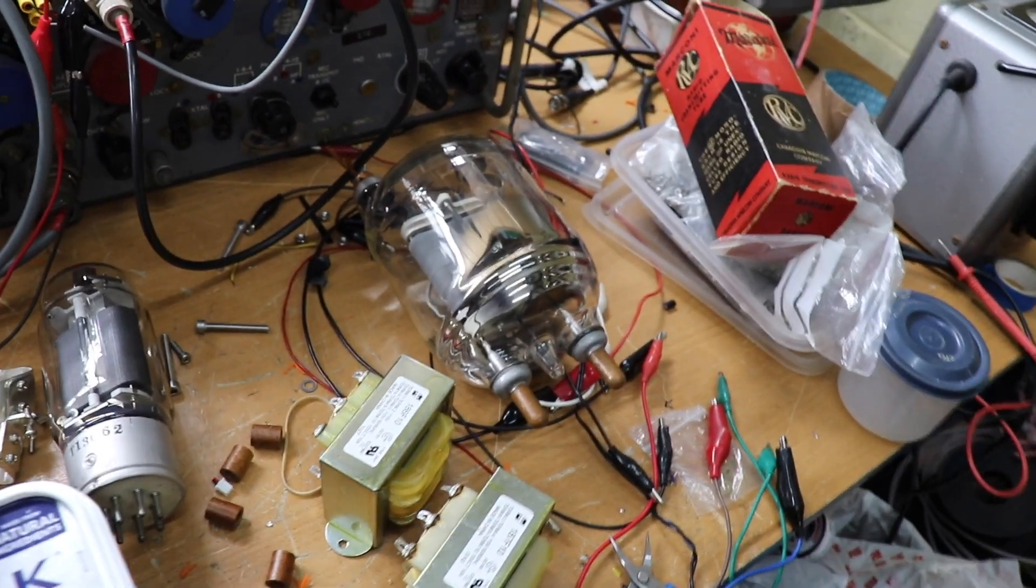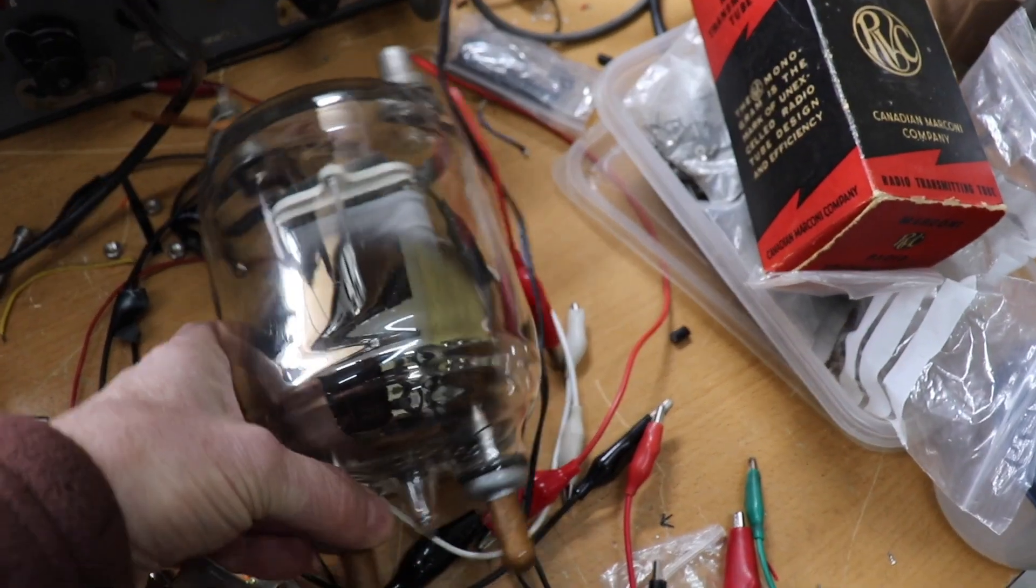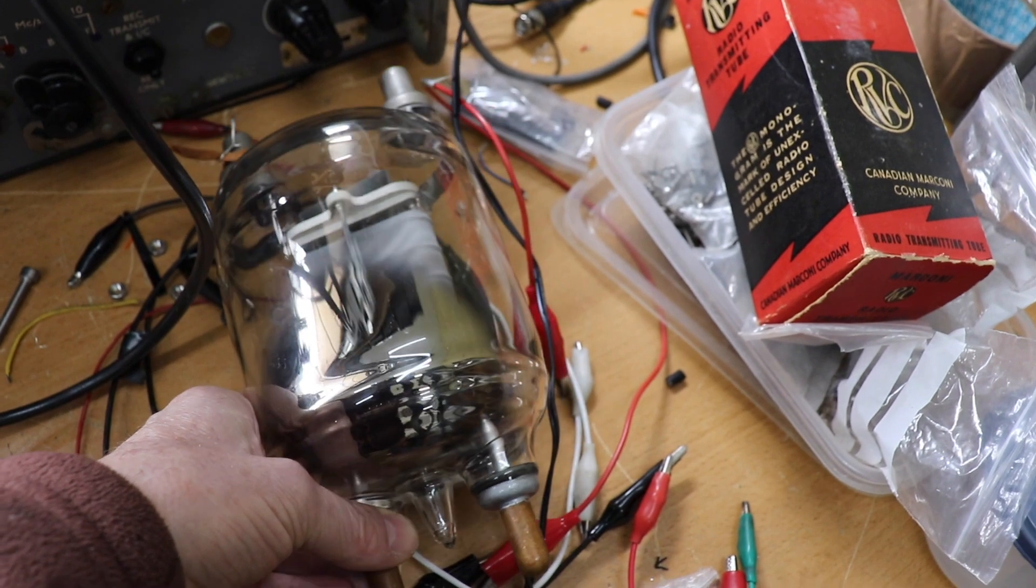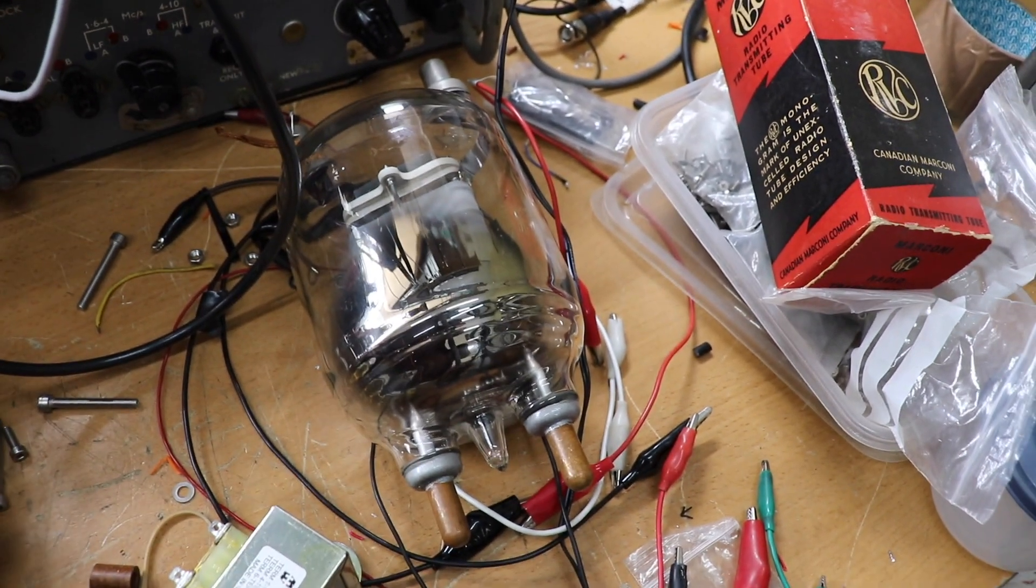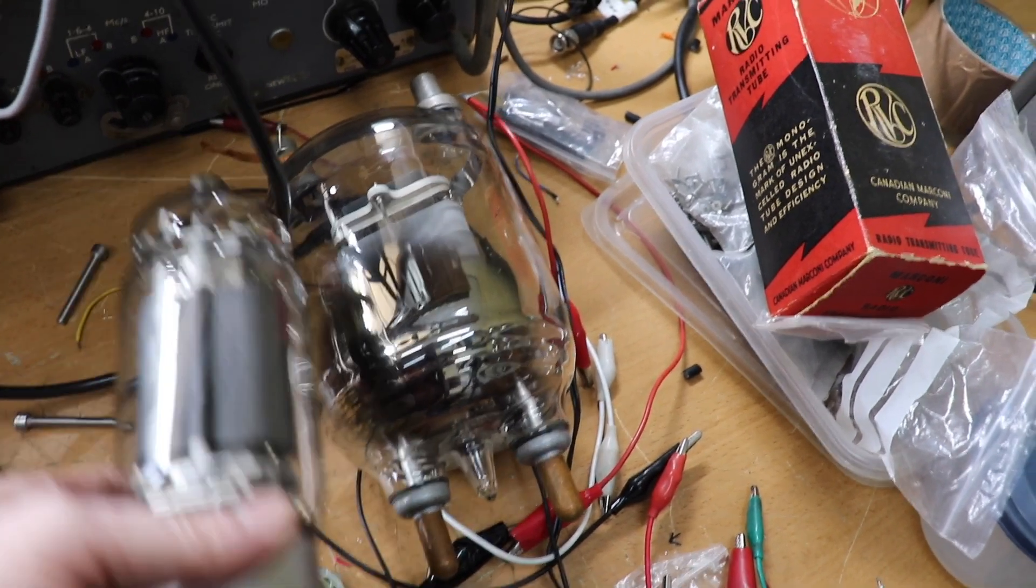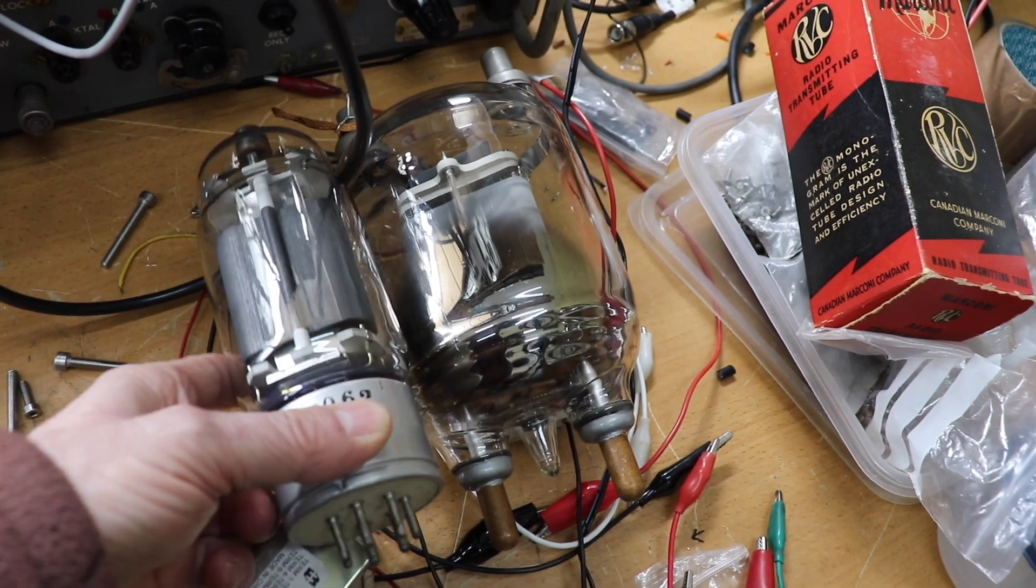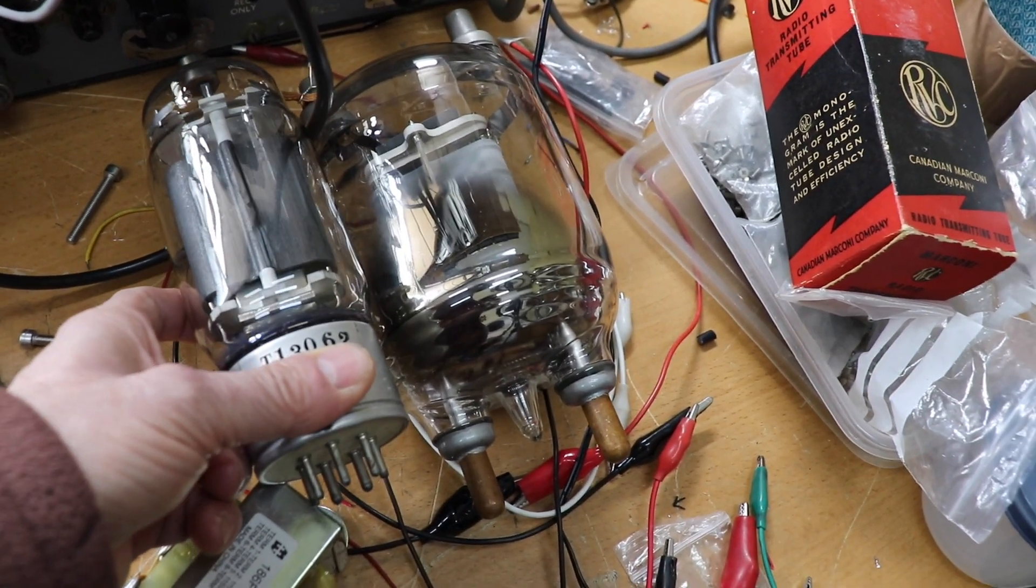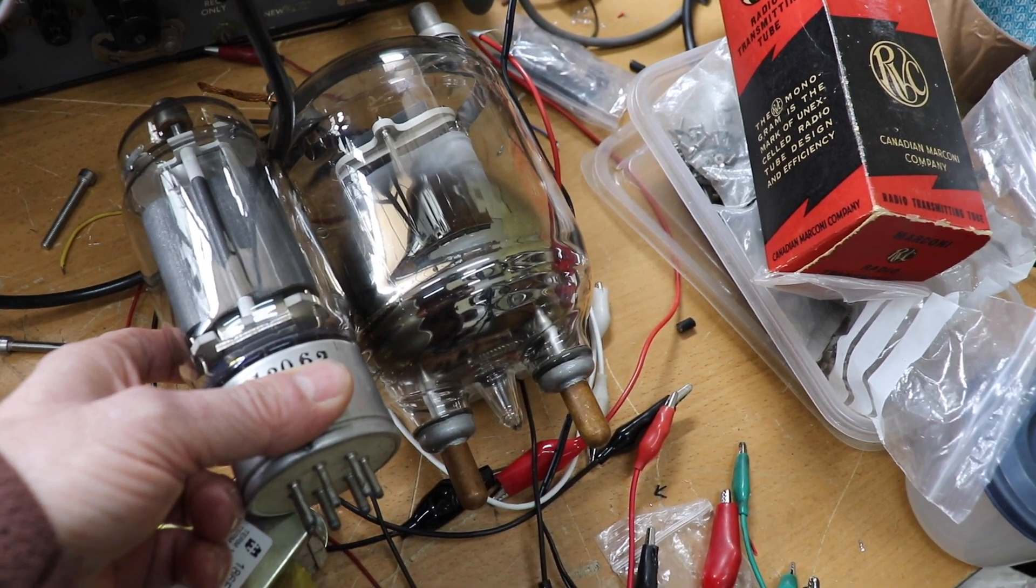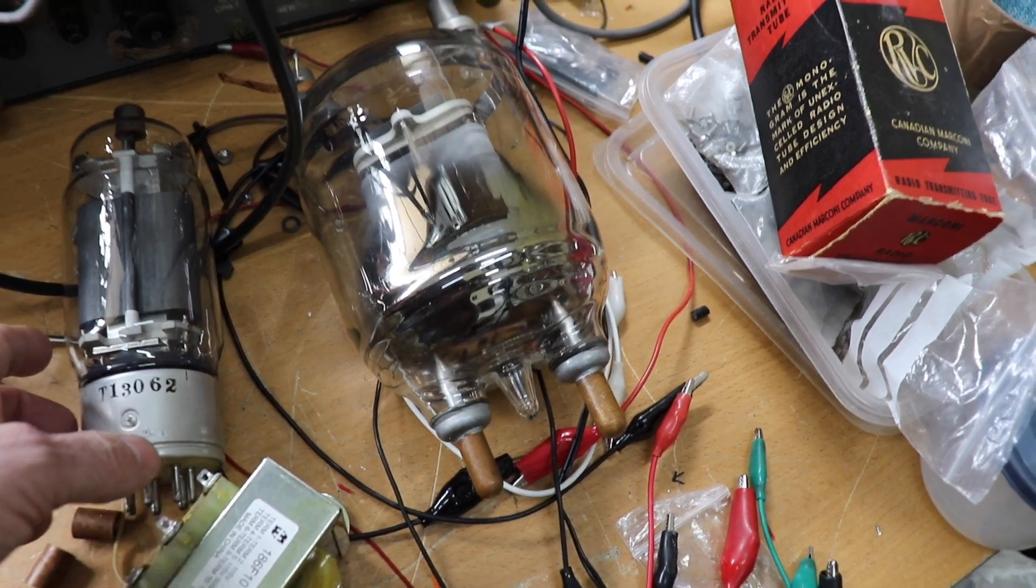This valve here that we're going to be using isn't actually an 833A but it's almost identical. It's actually a Russian GU-48. I'm going to be using two of these in this amplifier. Just to give you an idea of size - that's an 813 or an 813 as our American cousins say. As you can see, this 833A or GU-48 is pretty big. It's quite a big valve. It's a triode by the way.